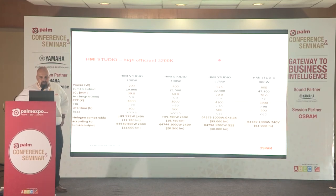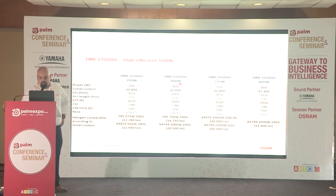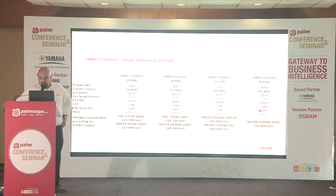Here are some numbers to compare. The HMI Studio 200 W light intensity is comparable to an HPL 575 or 500 W halogen lamp. The 400 W version is comparable to a 750 W halogen, and so on. You can see really much higher efficiency with the HMI Studio.